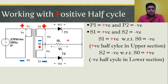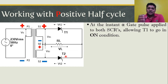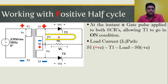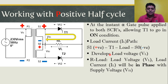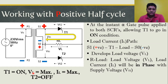Because of this biasing, the upper half produces a positive half cycle, forward biasing thyristor T1, while reverse biasing thyristor T2. However, both SCRs remain off. At the instant alpha, a gate pulse is applied to both SCRs using a common gate circuit. Since T1 is in forward bias, it goes on immediately. T1 conducts, producing load current along the path S1→T1→R_L→S0, developing a load voltage. As the load is resistive, load voltage and load current are in phase with the supply voltage.